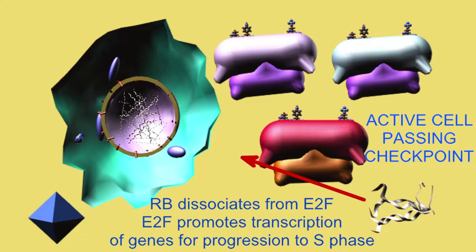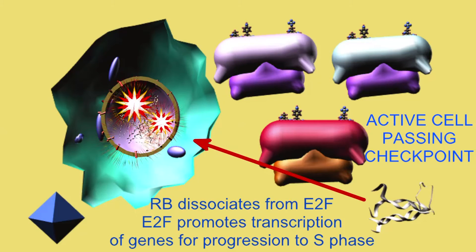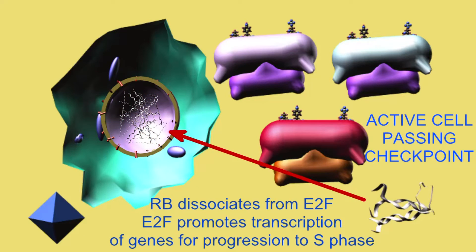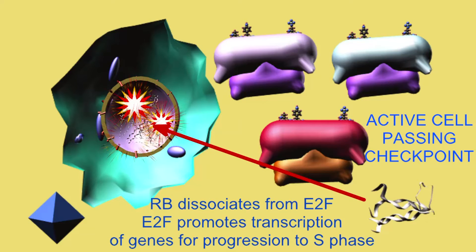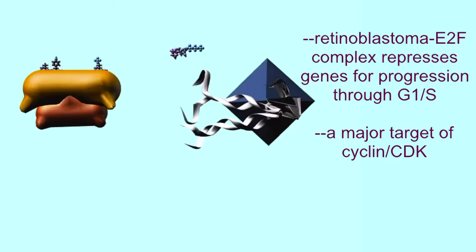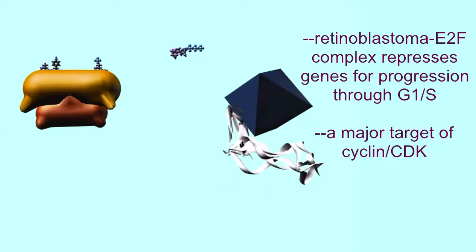but it also allows E2F to act as a transcription factor for genes promoting cell growth. For example, the synthesis of DNA in the S phase requires E2F. So in the active cell, RB is dissociated from E2F, and E2F can now activate the transcription of genes which promote cell growth.